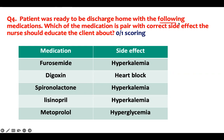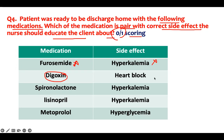The patient is ready to be discharged home. Pharmacology question: which of the following medications are paired with the correct side effect? Zero/one scoring. Furosemide causes hypokalemia — so that pairing is wrong if listed otherwise. Digoxin — side effect is heart block — correct. Spironolactone — side effect is hyperkalemia — correct. Lisinopril — side effect is hyperkalemia — correct. Metoprolol — side effect is hypoglycemia — correct. So you can get four out of four.